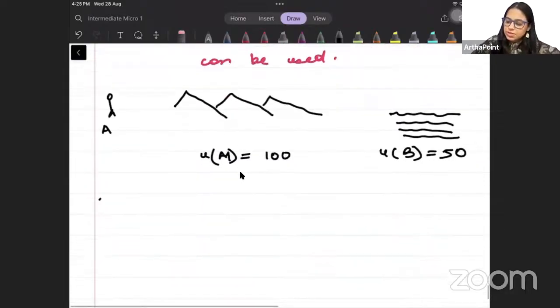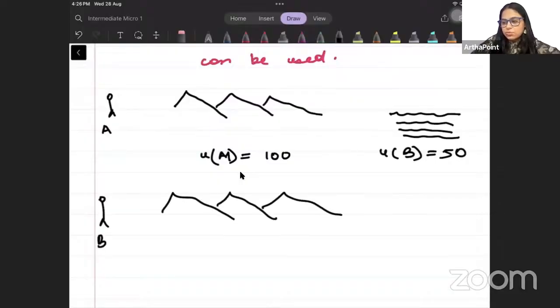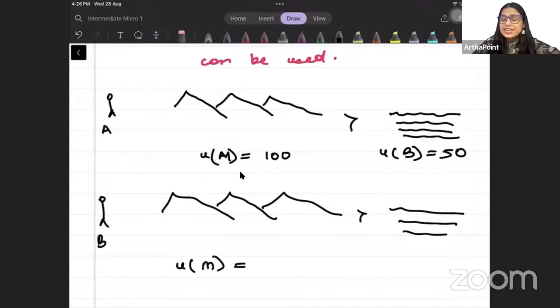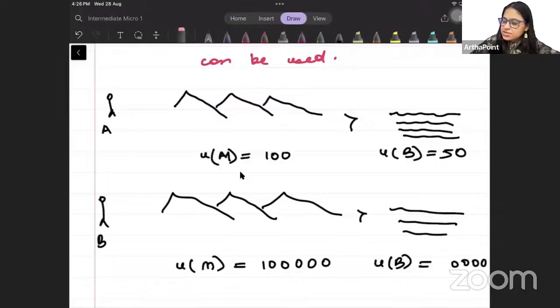But there is individual B. He also likes mountains over beaches. But if I ask individual B, how much utility you get from mountains? He is very jolly person. He says, I get a utility of 1 lakh from mountains. And I get a utility of 50,000 from beaches.